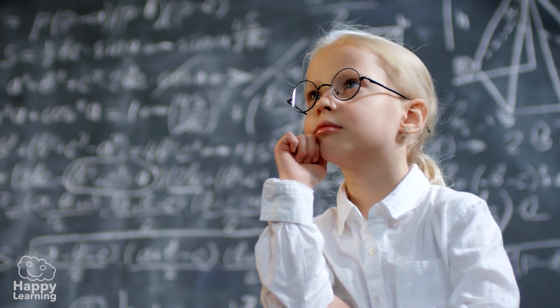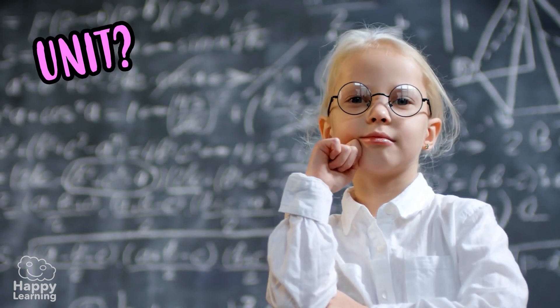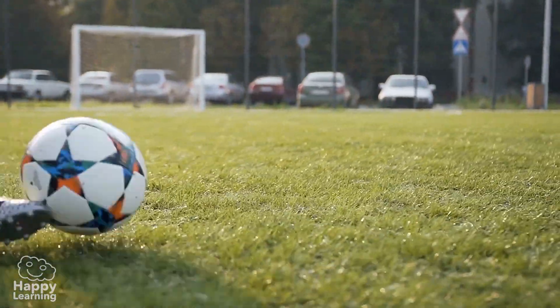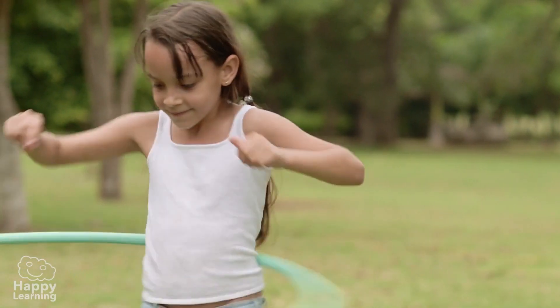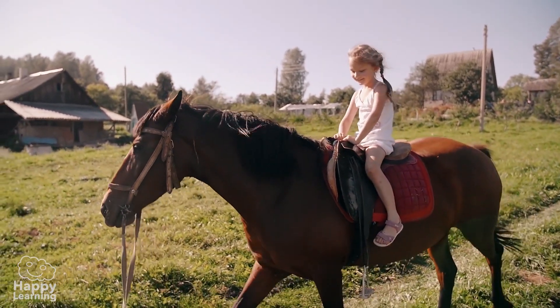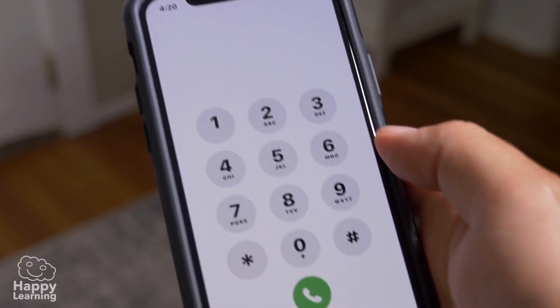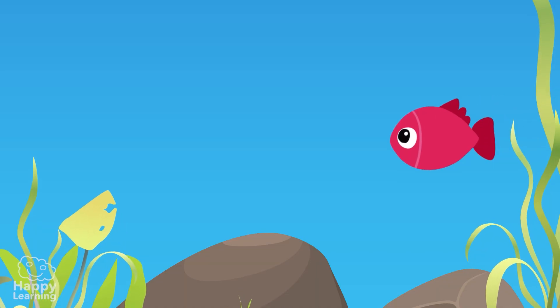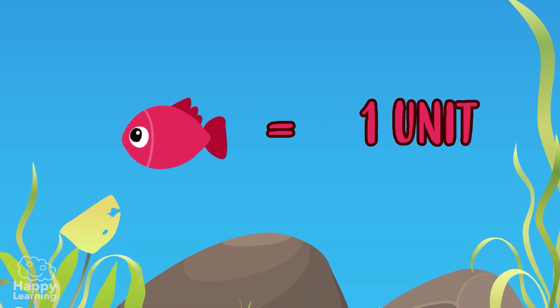Do you know what a unit is? It's very easy. Each element is called a unit. It could be anything, for example a toy, a tree, or an animal. The units are represented by single digit numbers. One fish is equal to one unit.